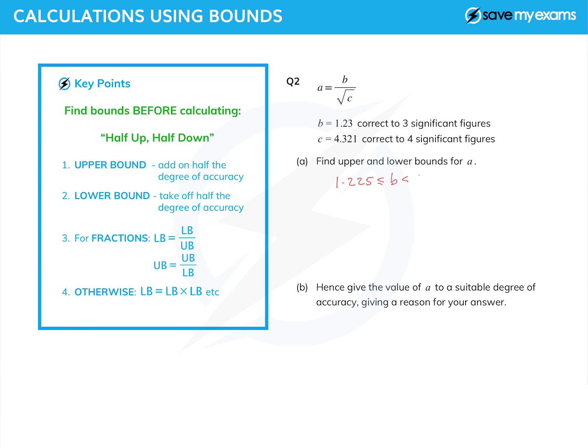And similarly for c, the fourth significant figure. So we get 4321 becomes 4320.5, and 4321.5. And we've gone a half up and a half down.